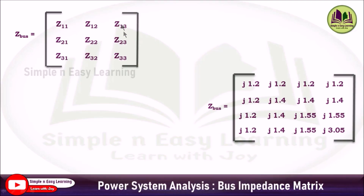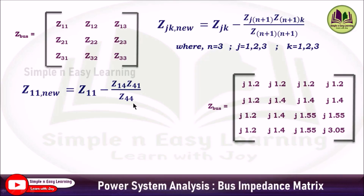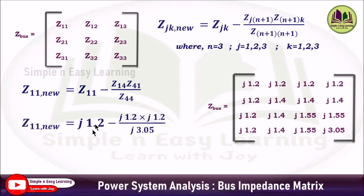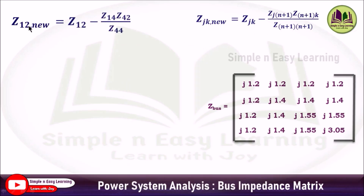We need to obtain nine terms. First, Z11: with j=1, k=1, the formula gives Z11(new) = Z11 − (Z14 × Z41) / Z44. Substituting from the matrix: Z11 = j1.2, Z14 = j1.2, Z41 = j1.2, Z44 = j3.05. So Z11(new) = j0.728.